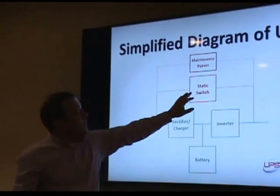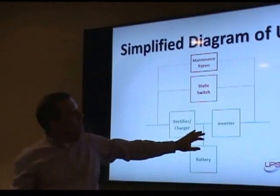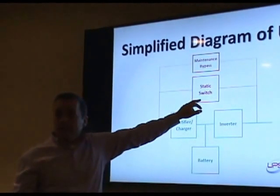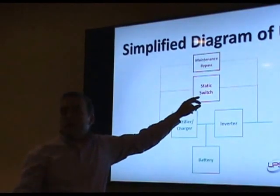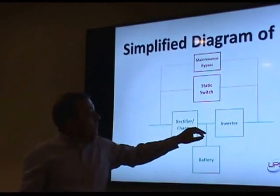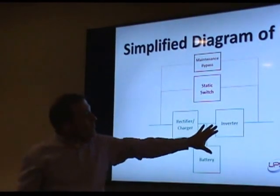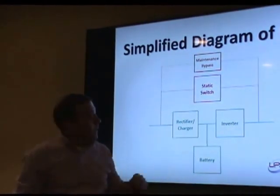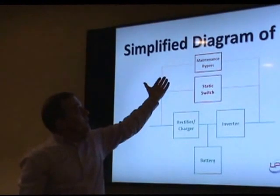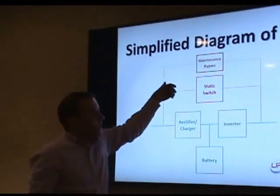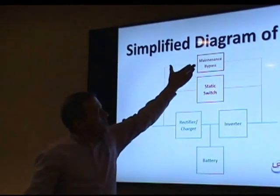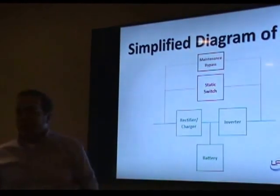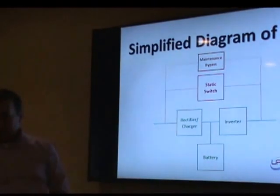In the event that there's an issue with the UPS and it has a failure, it has a little built-in static switch, and it will transfer from UPS right over to utility power. In the event you have to do maintenance, there's another switch outside of that where you can actually close this switch and pull the whole UPS out and replace it if you had to.